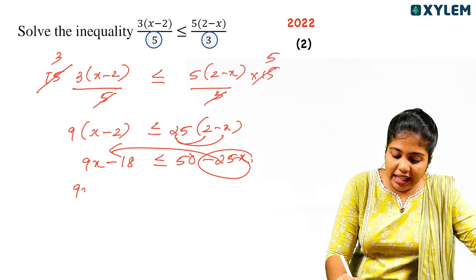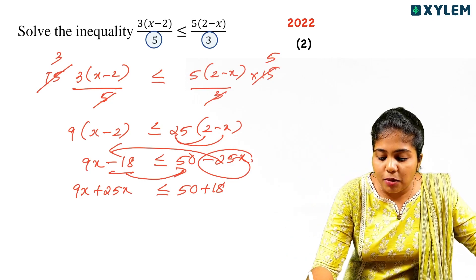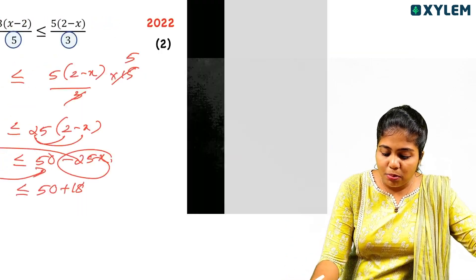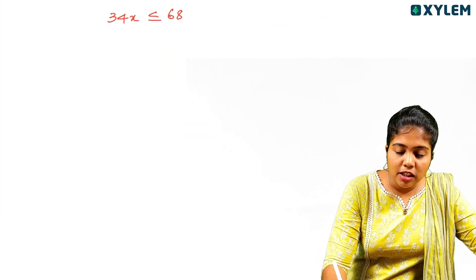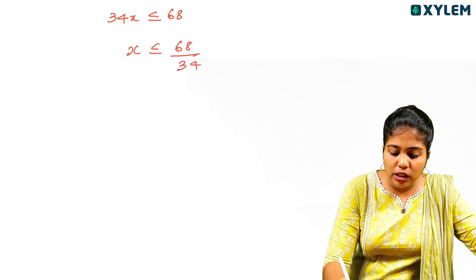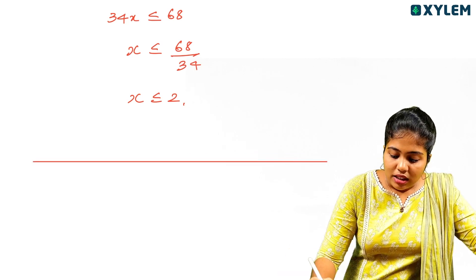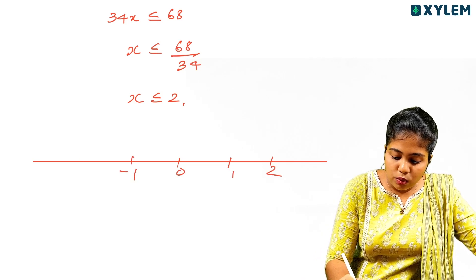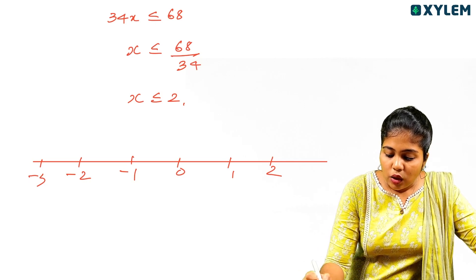Expanding and collecting terms, we get 34x less than or equal to 50 plus 18, which is 68. So x is less than or equal to 68 divided by 34, which equals 2. On the number line: 0, 1, 2, minus 1, minus 2, minus 3 — x is less than or equal to 2.